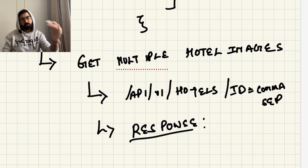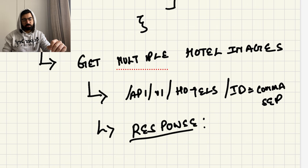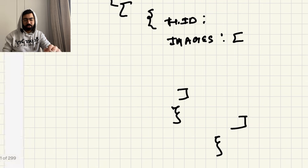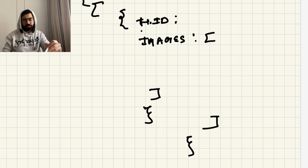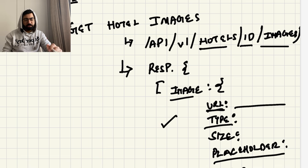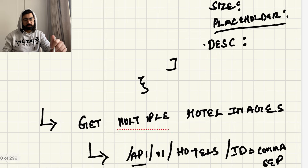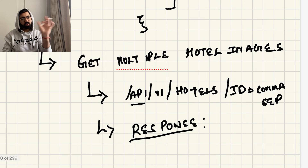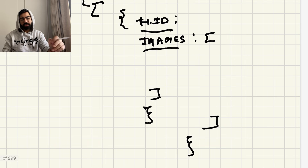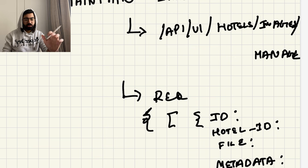The second API — get multiple hotel images — is used on the search page or for related hotels. You pass comma-separated hotel IDs as parameters. The response includes a hotel ID and corresponding images for that hotel in a list format. You can potentially use the same first API and just pass comma-separated IDs as your param.